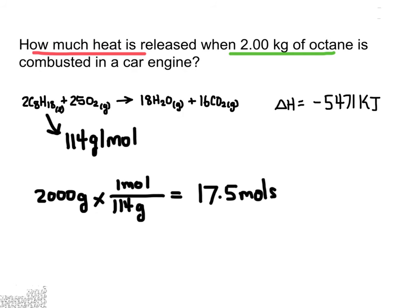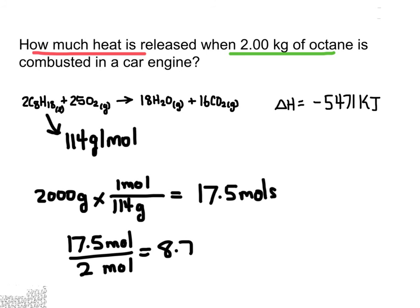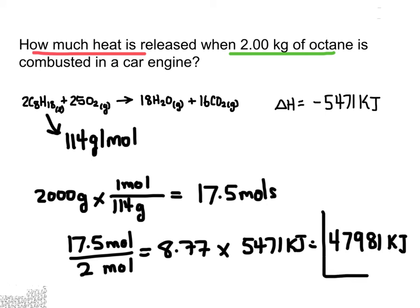Two kilograms is the same as 17.5 moles of octane. The recipe requires 2 moles, so we find how many times bigger 17.5 is compared to 2: 17.5 divided by 2 equals 8.77. Multiplying that by the heat from the recipe gives us a total heat produced of 47,981 kilojoules.